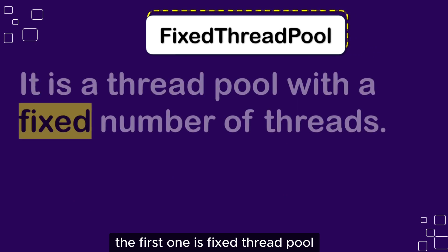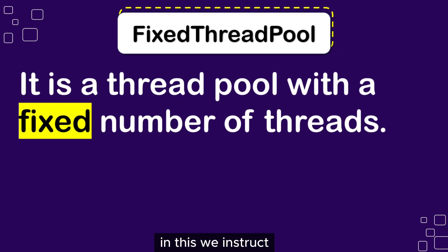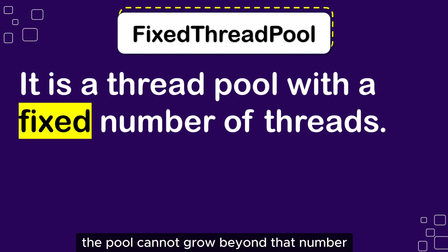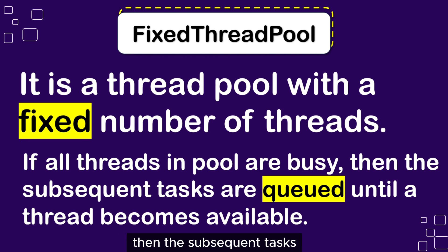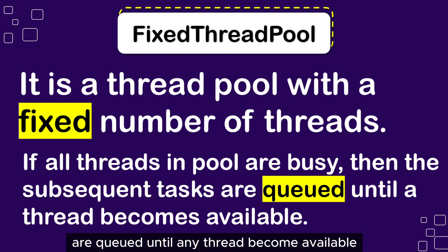The first one is Fixed Thread Pool. It is a thread pool with a fixed number of threads. We instruct the Executor Framework to create a pool with a predefined number of threads. The pool cannot grow beyond that number. If all threads in the pool are busy executing tasks, then subsequent tasks submitted to the pool are queued until any thread becomes available.